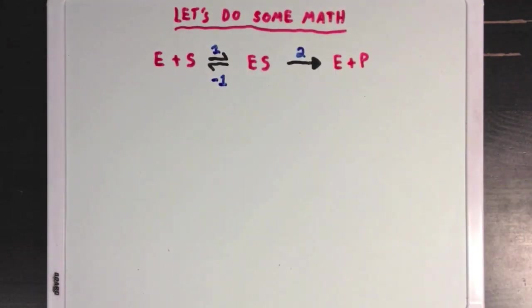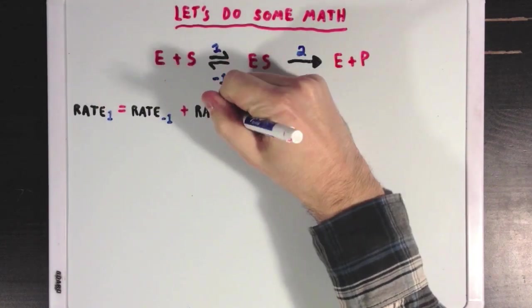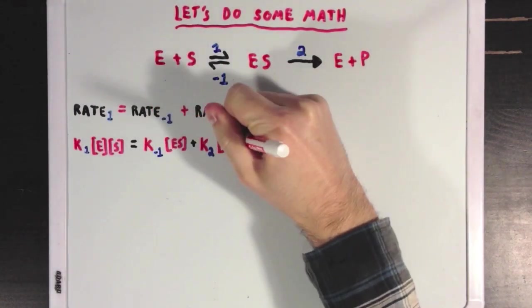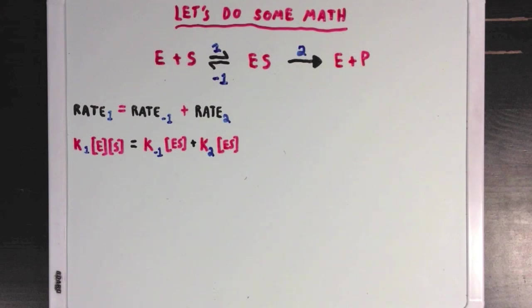So I'll start out by drawing the same sequence I did before, with the three different reactions. And I'll also write out that steady state equation I mentioned before, where we have rates forming ES equal to rates taking away ES. Now the first thing I'll do is swap out those rate values for their rate constants times the reactants for those reactions. So rate one will be equal to K1 times E times S, and so on for the other two.